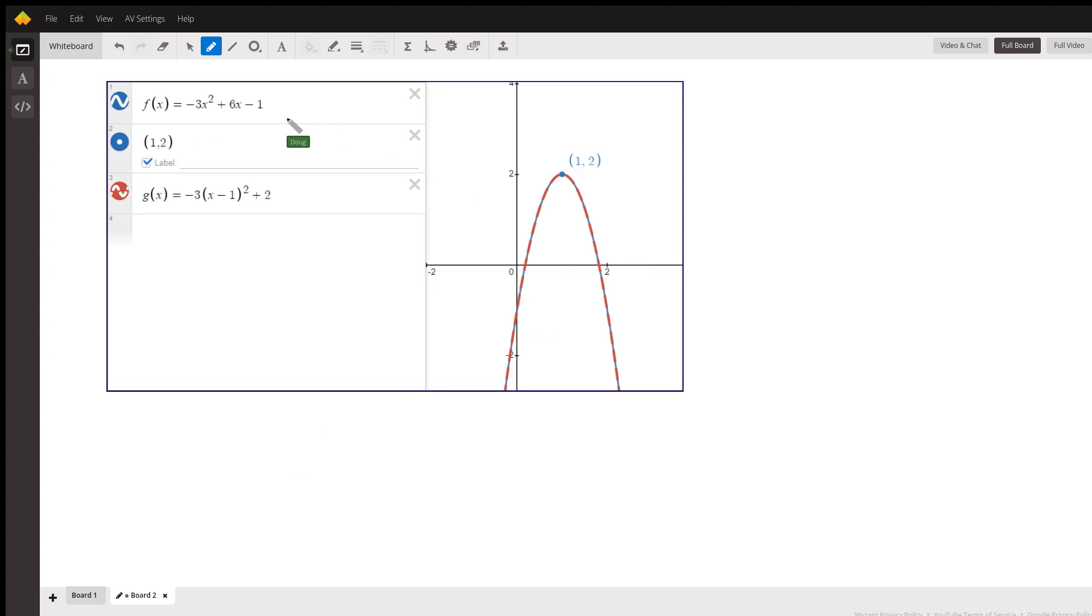There's the original function written in standard form. Here it is written in vertex form. And there's the vertex, 1, 2.